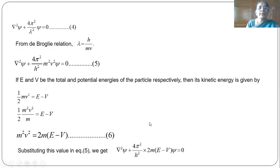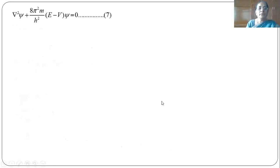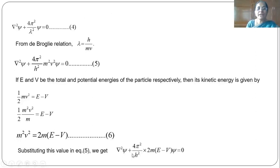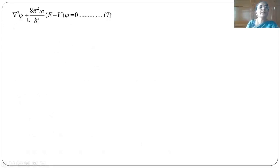Substituting this value of m²v² into equation 5, equation 5 becomes ∇²ψ + (4π²/h²) · 2m(E minus V) ψ equal to zero. Rearranging, multiplying out the 2 and 4π²/h² gives 8π²/h², so we get ∇²ψ + (8π² m/h²)(E minus V) ψ equal to zero.